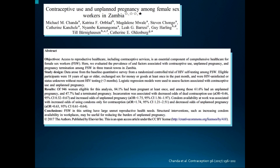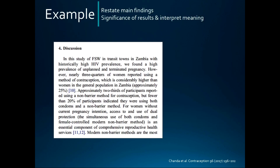The next example is from a paper published in Contraception on the contraceptive use and unplanned pregnancy in female sex workers in Zambia. Here, the authors start by restating their main finding, and then they offer the significance of the study — why it's important and why it's relevant.